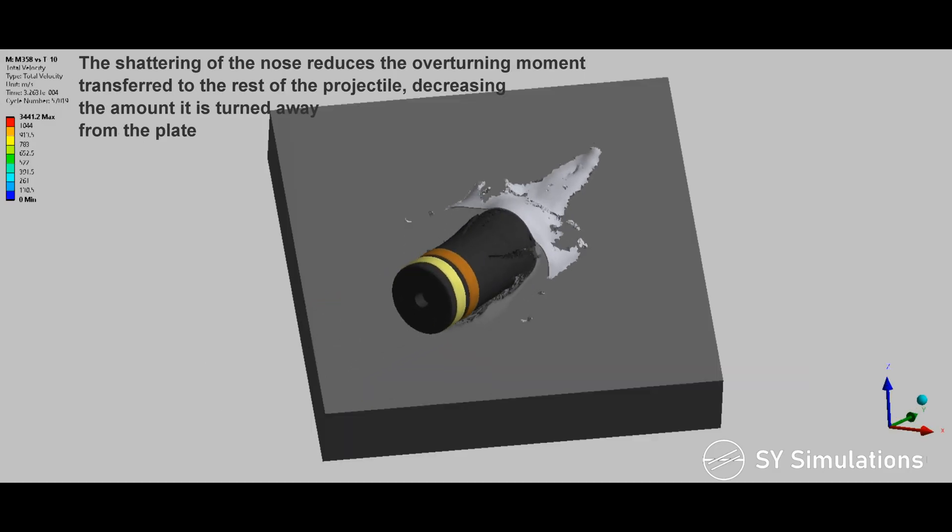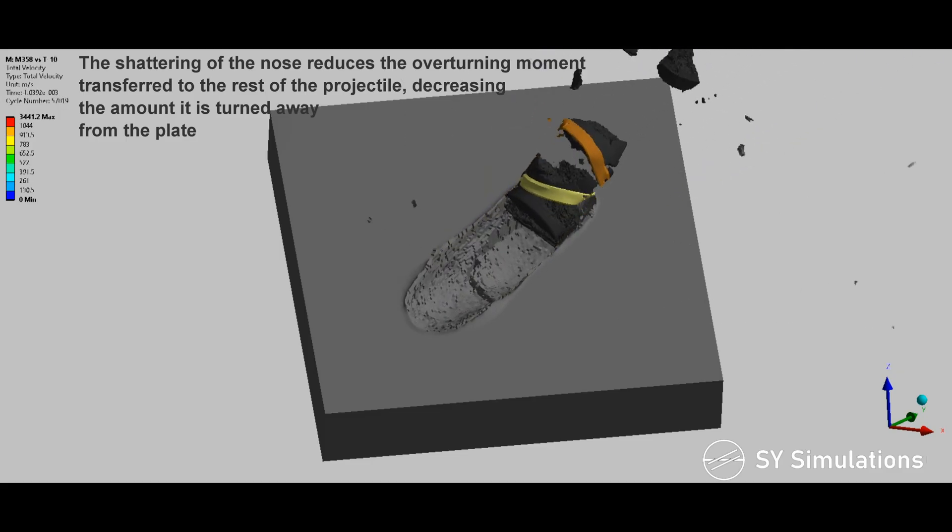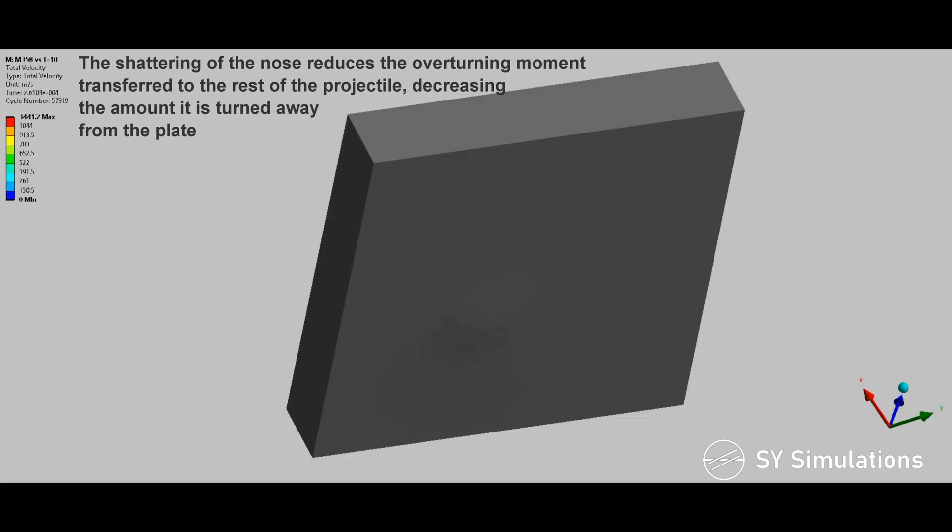The shattering of the nose reduces the overturning moment transferred to the rest of the projectile, decreasing the amount it is turned away from the plate.